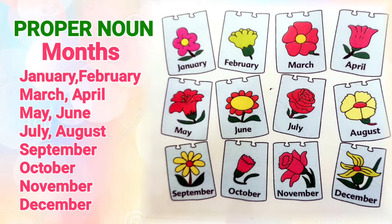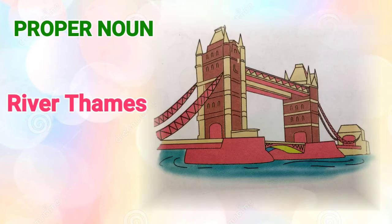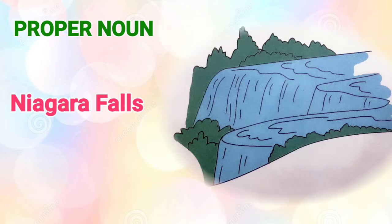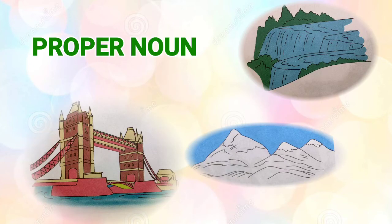The names of mountains, oceans, seas, rivers, and lakes are also proper nouns. For example, River Thames, Niagara Falls, and Mount Everest — these are names which stand with a capital letter, so they are proper nouns.